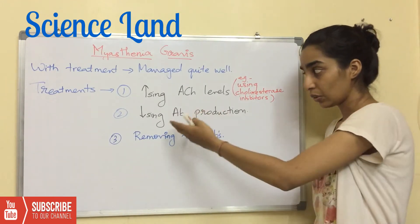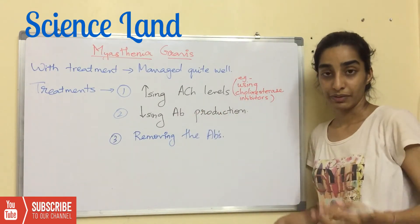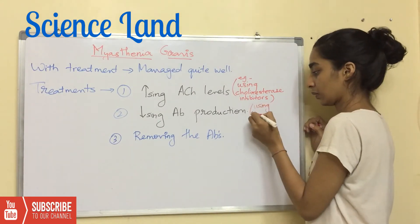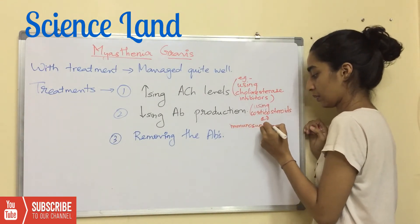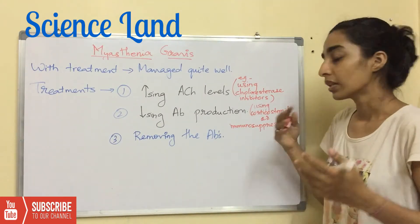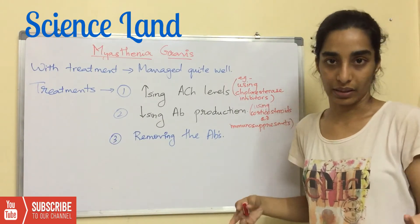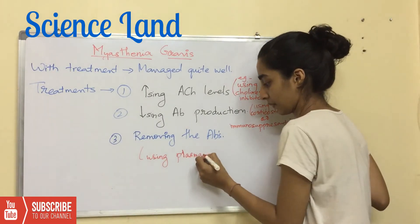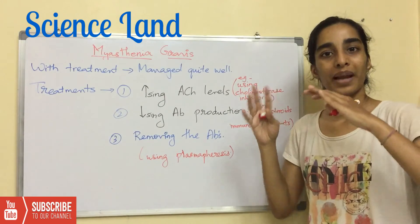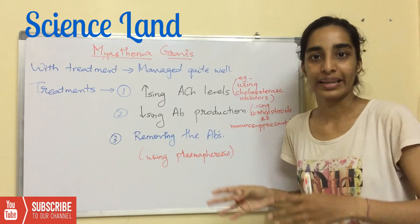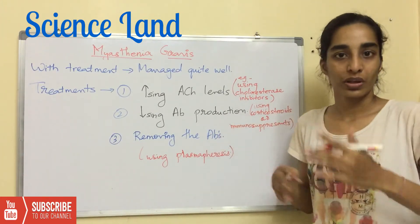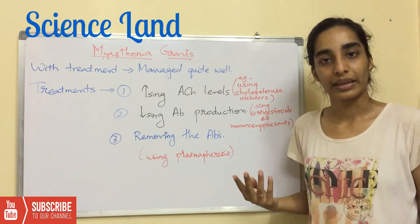The second treatment is to decrease antibody production. If there is no autoantibody, they won't bind to the acetylcholine receptors. Either you use corticosteroids or immunosuppressants. The third treatment is to completely remove the autoantibodies. This is done by using plasmapheresis, meaning the plasma which has autoantibodies is exchanged with new plasma that does not contain autoantibodies, removing the antibodies in that manner.